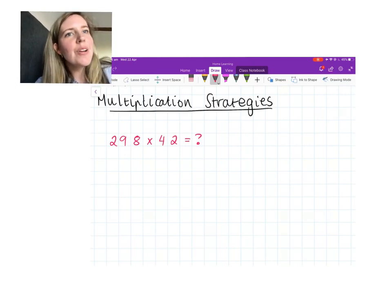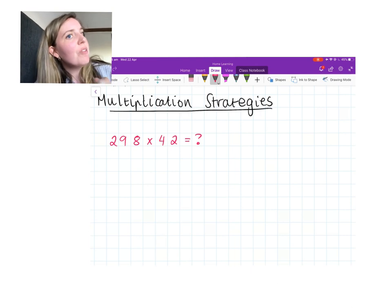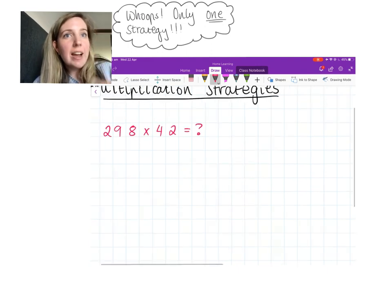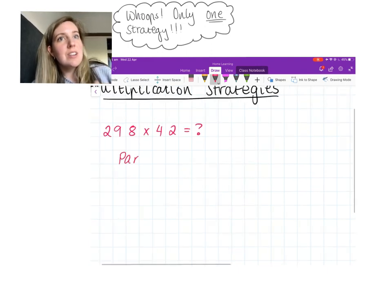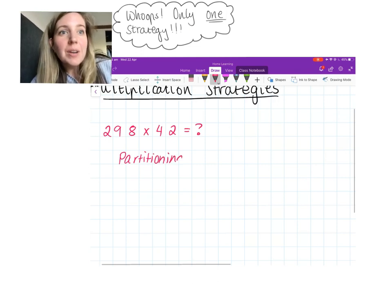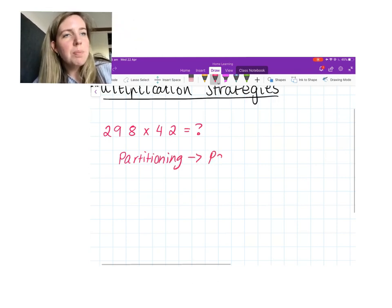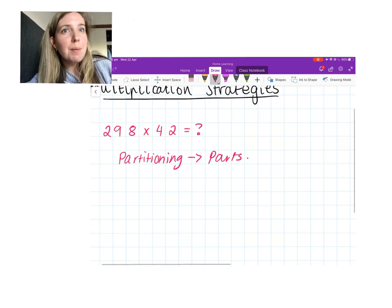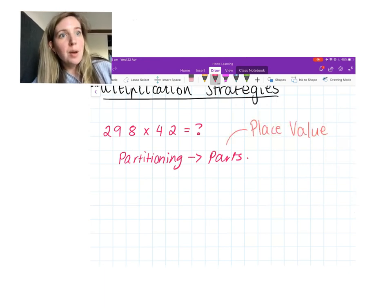Hey guys, I've pre-recorded a video showing you different multiplication strategies. Today I'm going to go through two ways to solve multiplication for really large numbers. The first one is partitioning. Partitioning is basically when we split a number into its place value parts.